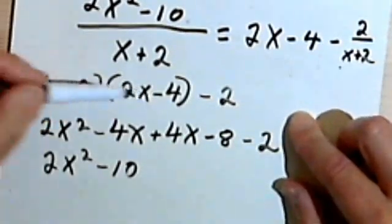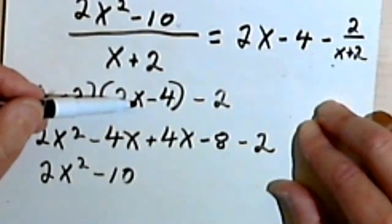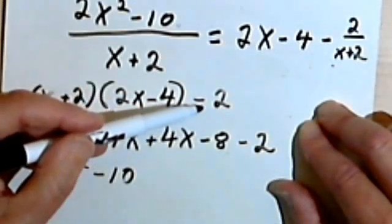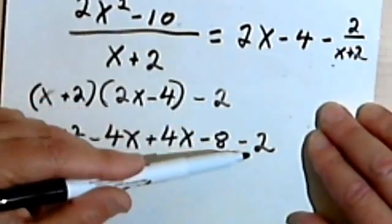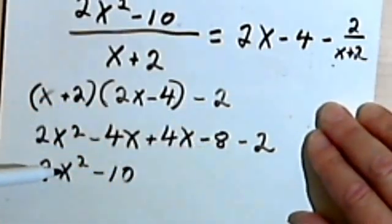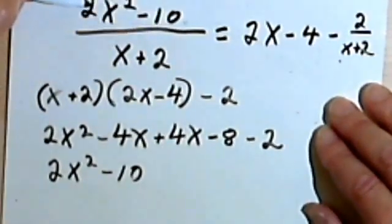So here's where we've set it up. Then you carry out your multiplication. You're multiplying a polynomial times a polynomial. Make sure you include, after you're done with the multiplication, make sure you include that remainder. Combine all your like terms, and you should end up with the original numerator.